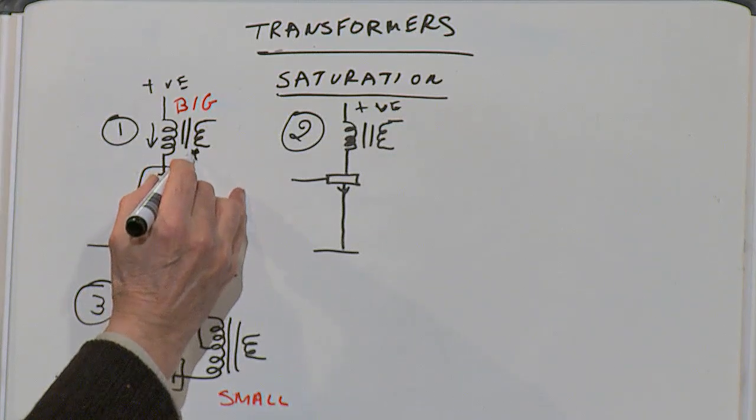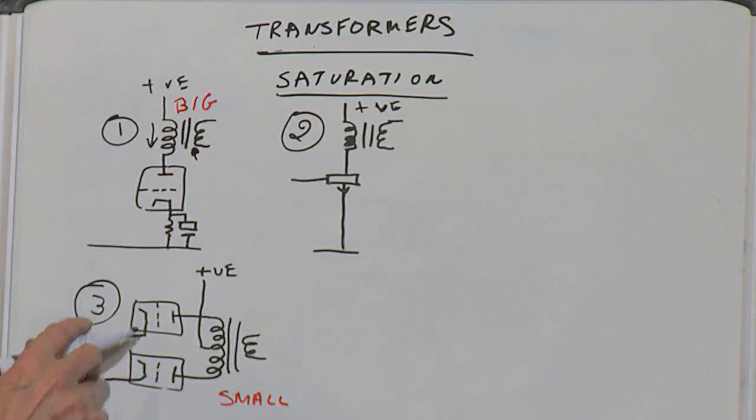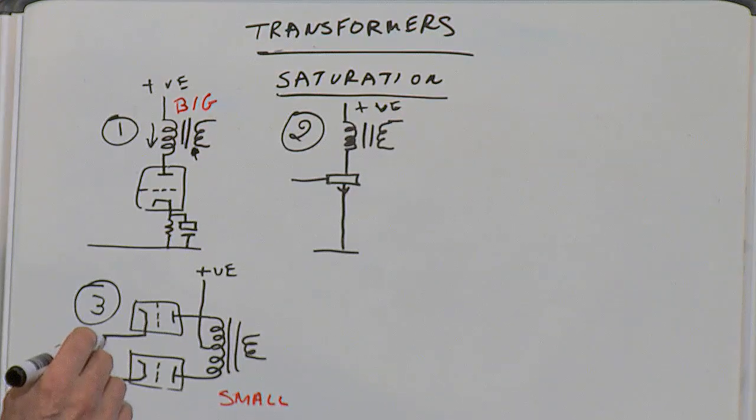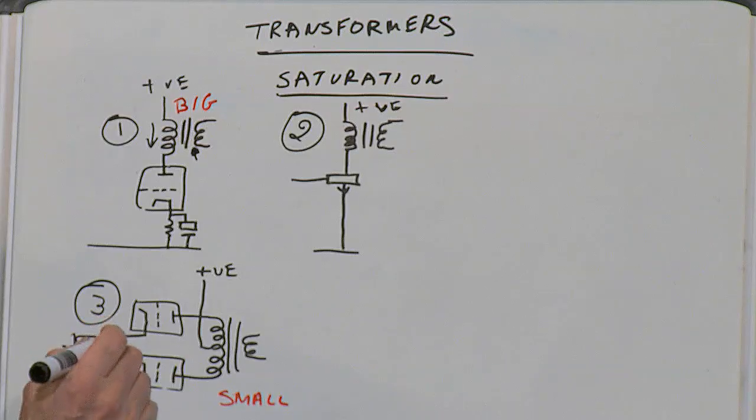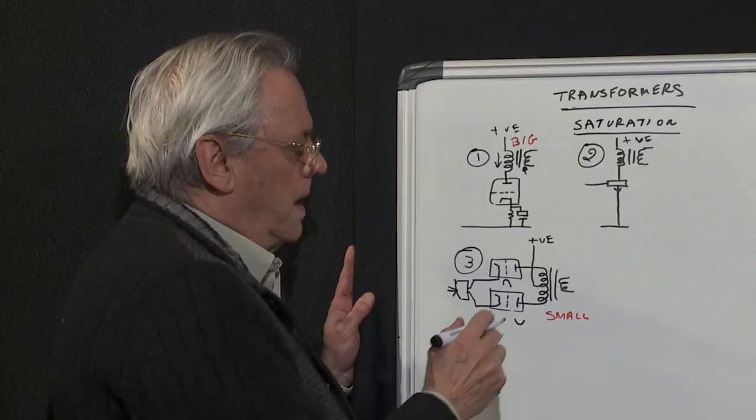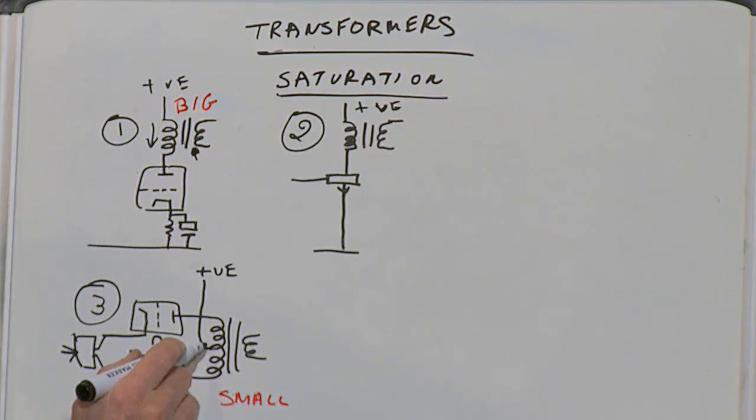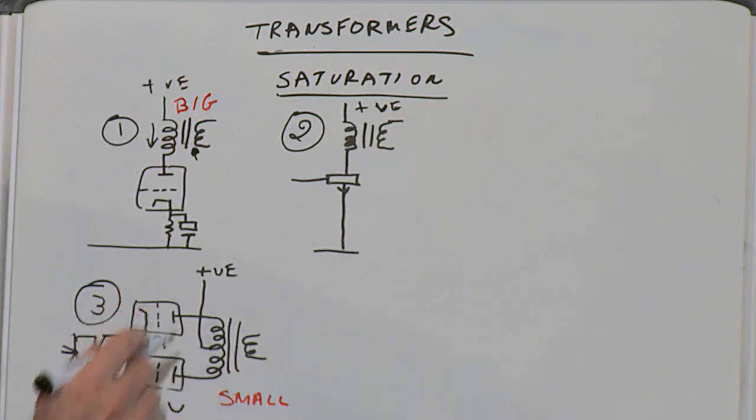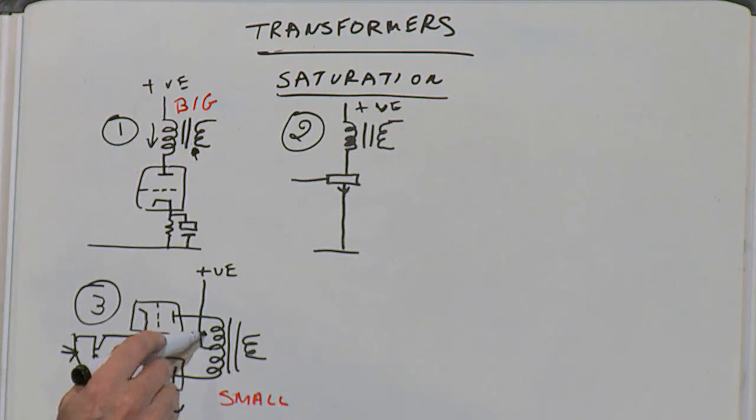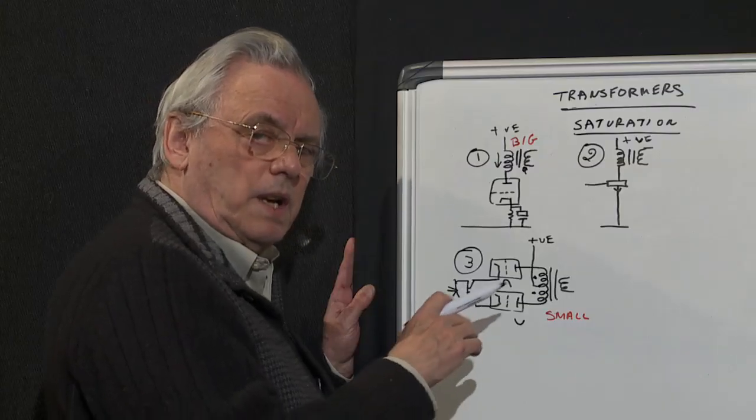A way around this is to use what's called a push-pull output, and here again I'm using tubes as an example. You have the signal coming through what's called a phase splitter—there's the input. This valve here will amplify the positive bits and that bit will amplify the negative bits. The phase is effectively reversed in the transformer primary because the center tap of that transformer—that's the center of the windings—goes to the supply voltage. This means that the DC in that part of the primary is out of phase with the DC in that part of the transformer.